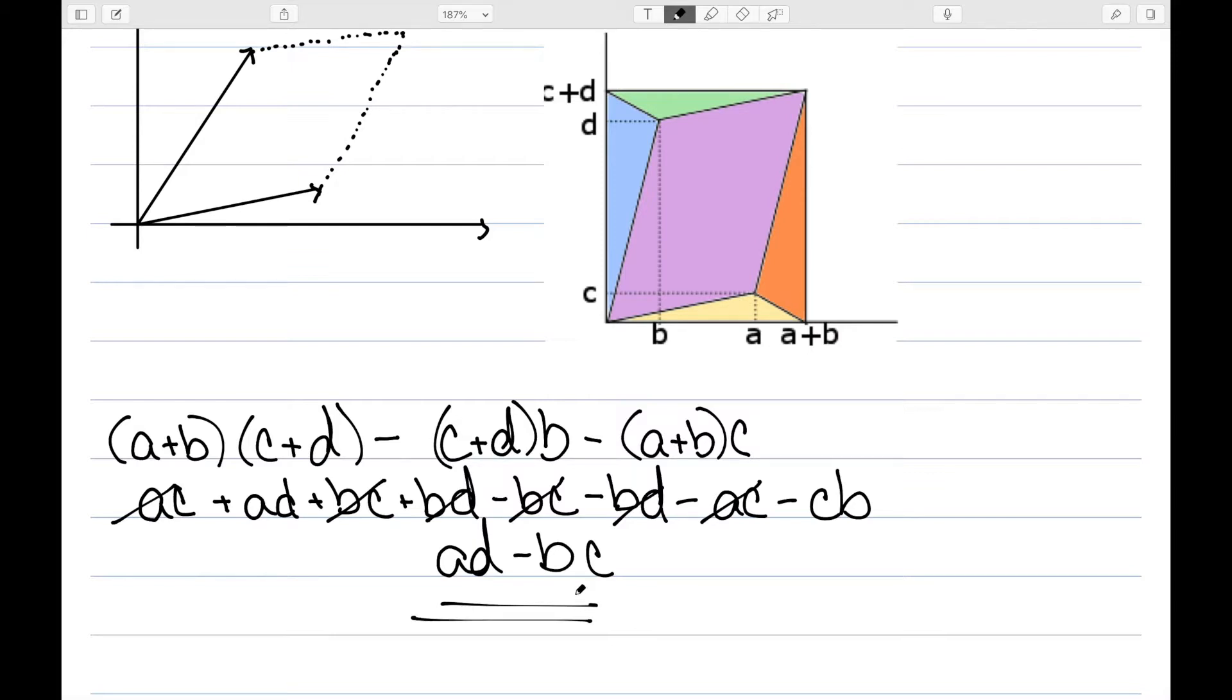The fact that we need the absolute value is because while this particular example only looked in the first quadrant, if we want to move to other quadrants, this value might be negative. So let's look at an example of this.